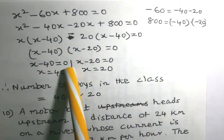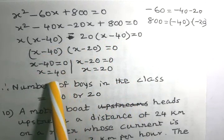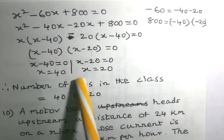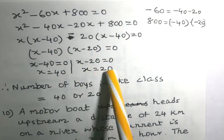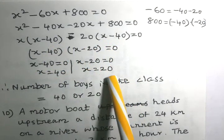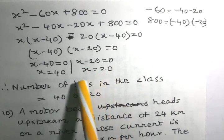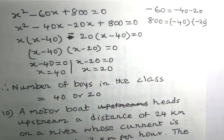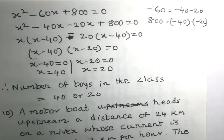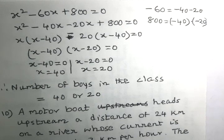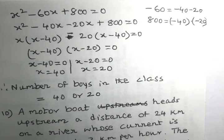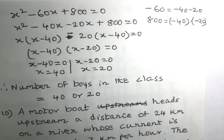From x minus 40 equals 0 we get x equals 40, and from x minus 20 equals 0 we get x equals 20. Therefore the number of boys in the class is either 40 or 20. Now we consider another problem.